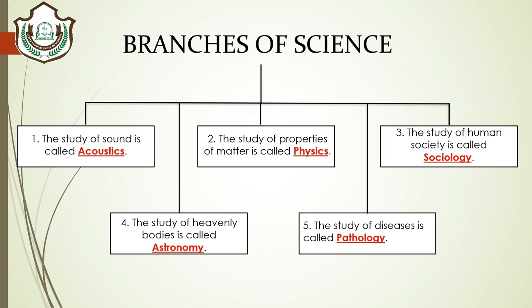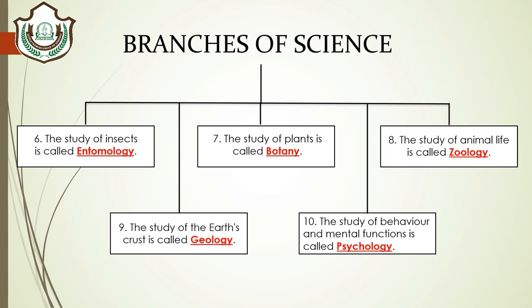Fifth: the study of diseases is known as pathology. Sixth: the study of insects is called entomology. Seventh: the study of plants is known as botany. Eighth: the study of animal life is known as zoology. Ninth: the study of the earth's crust — which is the outermost layer — is known as geology.